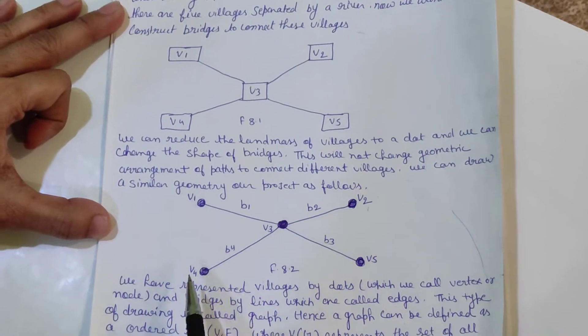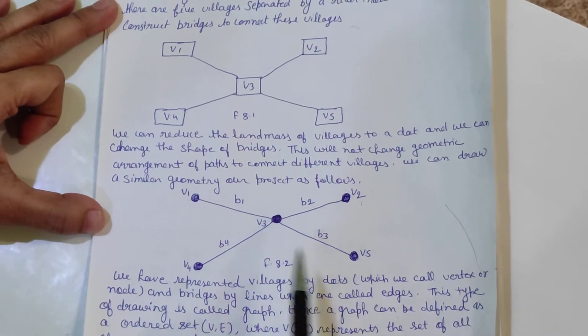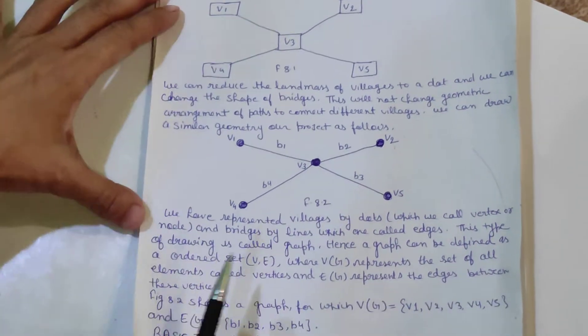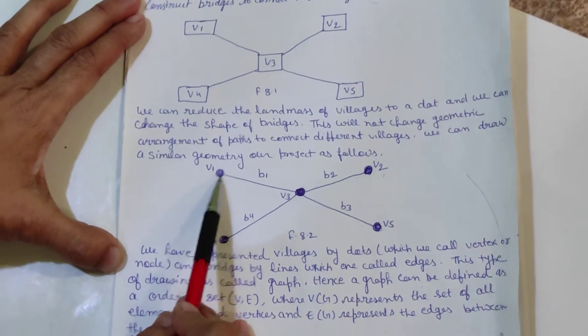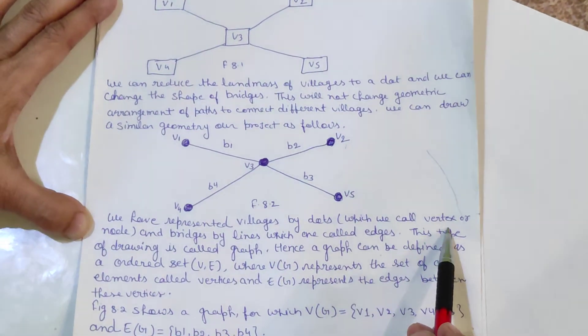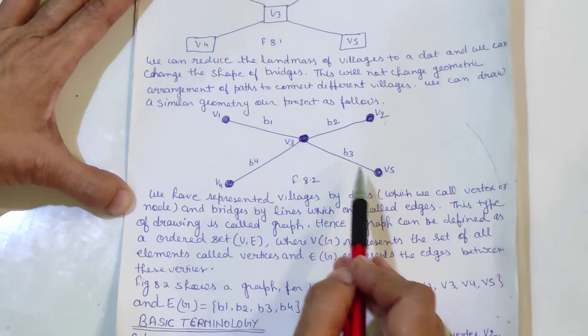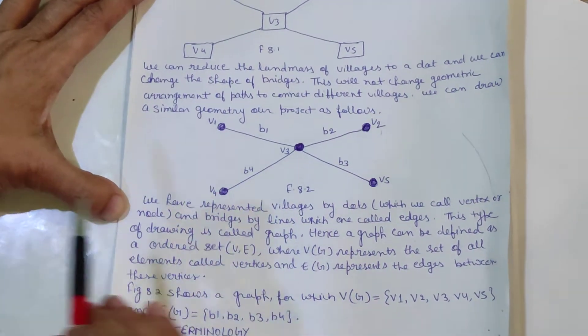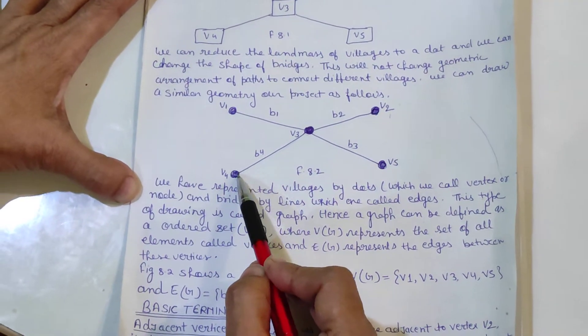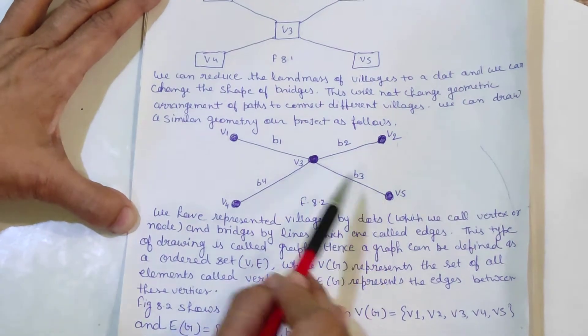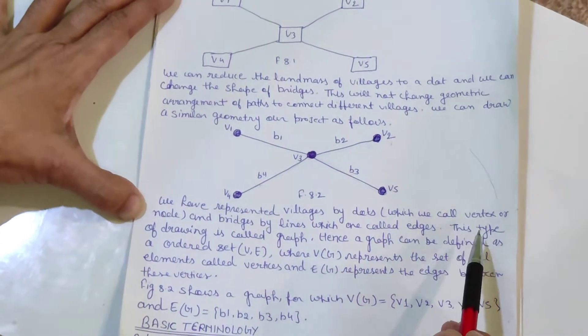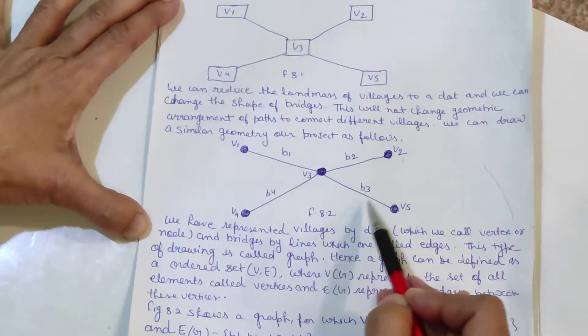We can draw a similar geometric project as follows: V1, V2, V3, V5, V4. 5 villages we have connected. In this we are representing the villages as dots through which we call the vertex or node, and bridges by lines. V1, V2, V3, V4. This type of drawing is graph.